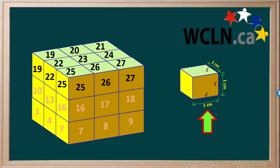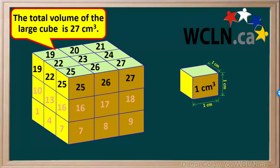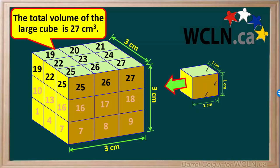Recall that each one of the small cubes has a length of 1 cm on each side, therefore its volume is 1 cm cubed. Because the large cube is made up of 27 small cubes, its total volume must be 27 cm cubed, or 27 cubic centimeters. Also, if you look closely at this diagram, it's easy to see that the length of each side of the large cube is 3 cm.